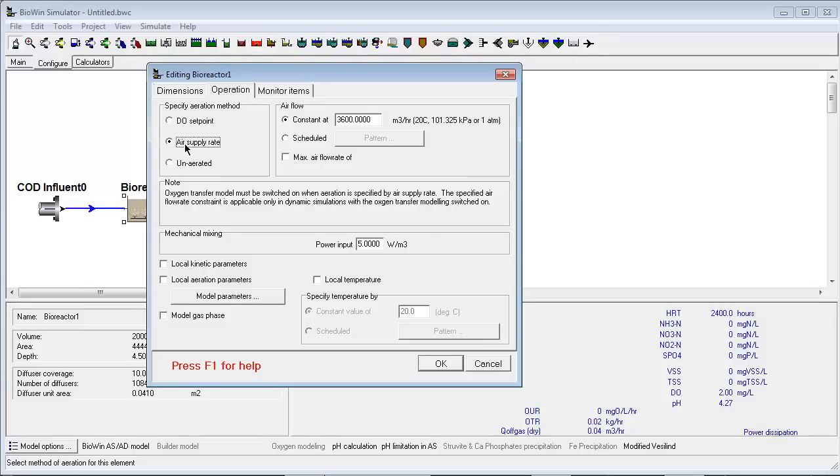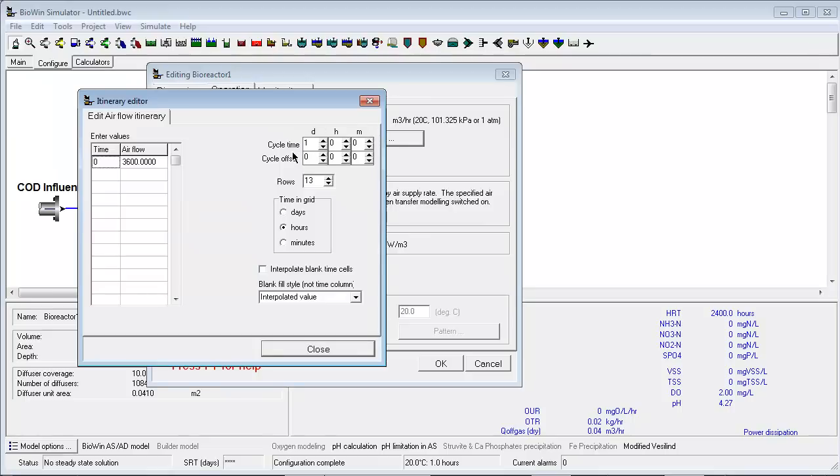Alternatively, we could provide information on a fixed air supply rate and have BioWin predict what the DO in the aeration tank will be as the flow and load changes throughout the day. Most operational parameters can be input as constant or time varying patterns so that we can accurately reflect how the real plant is operated.